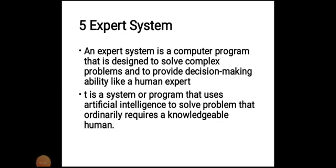Hi students. In MIS, the four types we have already discussed are: DSS (Decision Support System), TPS (Transaction Processing System), GDSS (Group Decision Support System), and EIS (Executive Information System). Here are the four types we have discussed.